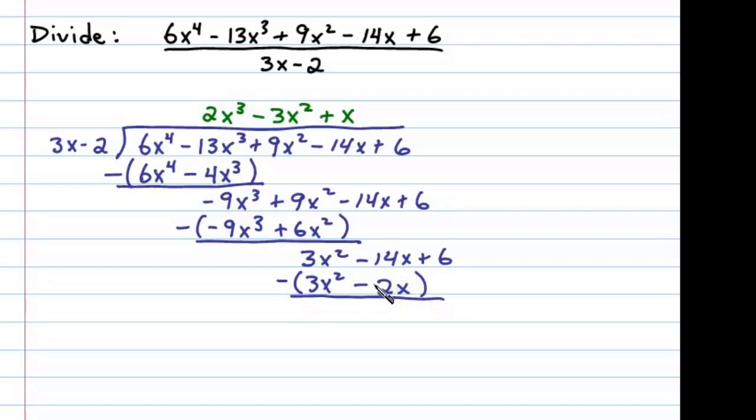Negative 14x minus negative 2x is really the same as negative 14x plus 2x, leaves us with negative 12x plus 6.